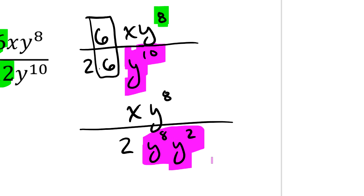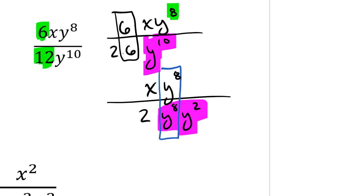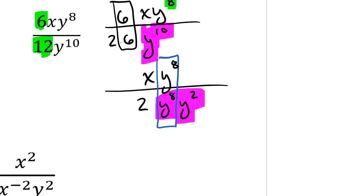What's nice about making that change is now I can see that I have another giant 1 of y to the 8th over y to the 8th. So the answer that I'll end up with is in the numerator, I will have just a factor of x. And in my denominator, I'm going to have a 2y to the 2nd power. So that's the answer for part b, x divided by 2y squared.